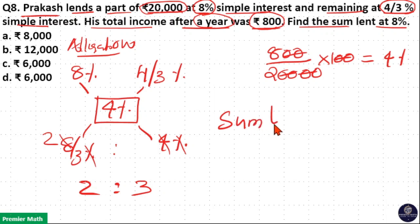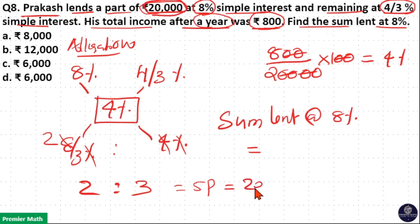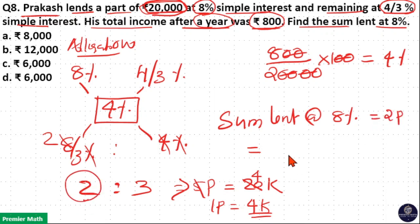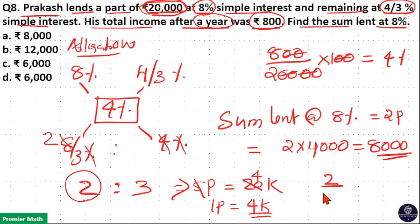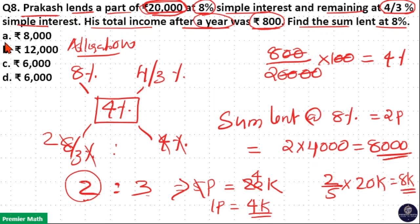We need to find the sum lent at 8%. The total parts are 2 plus 3, which is 5 parts, and this 5 parts equals 20,000 rupees. So 1 part equals 4,000. The sum lent at 8% is 2 parts, which is 2 into 4,000, equal to 8,000. Alternatively, 2/5 of 20,000 is also 8,000, since 2 parts out of 5 parts of 20,000 rupees gives 8,000. So option A is the answer.